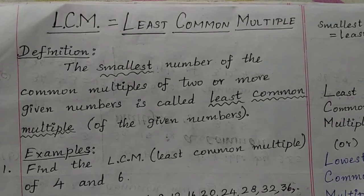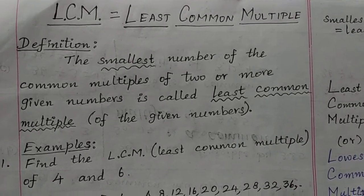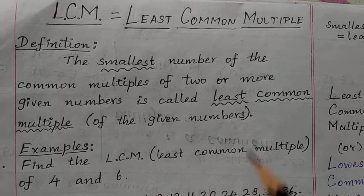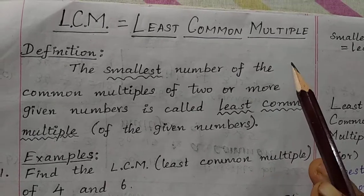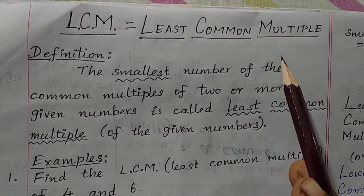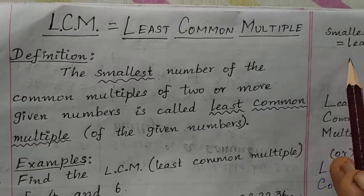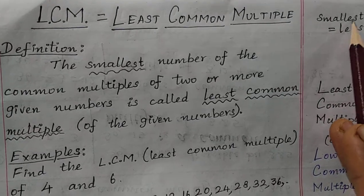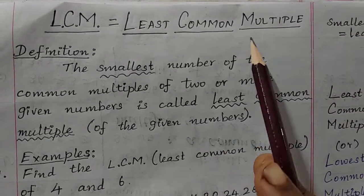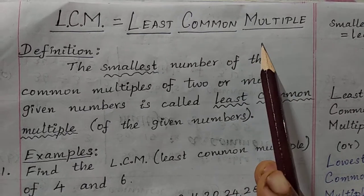In this video, let us learn about LCM. It is nothing but least common multiple. Least means smallest. So the smallest common multiple is called least common multiple.